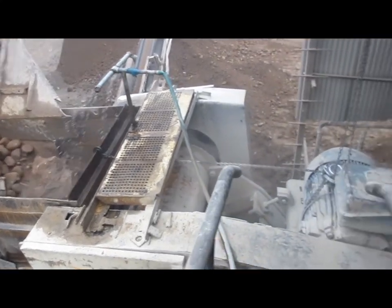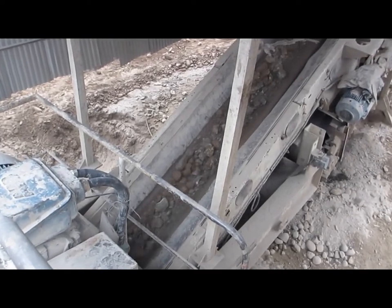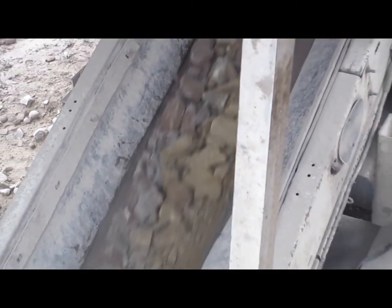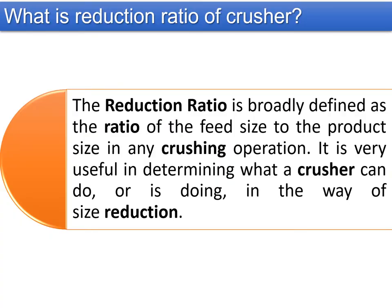Boulders are fed into the primary jaw crusher, and through its action, boulders of size 300 mm can be broken down to 40 to 60 mm sizes. The reduction ratio is broadly defined as the ratio of the feed size to the product size in any crushing operation. It is very useful in determining what a crusher can do or is doing in the way of size reduction.